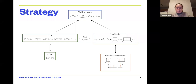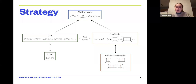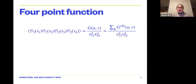The strategy we use is: take the CFT approach (shown in the green box), take a flat space limit to compare to the amplitude, and see what lessons we can learn. There is also a Mellin space approach shown in the blue box, which I won't have time to discuss, but I think it's very interesting and we can discuss it over Slack or elsewhere. Now let's focus on the CFT approach.